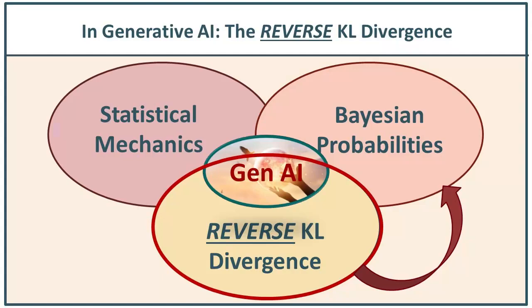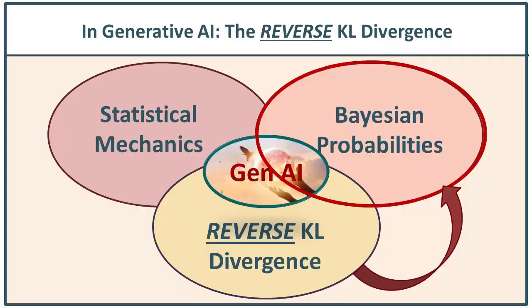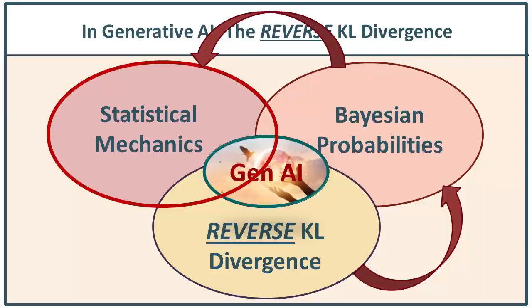They are, in order: number one, the reverse Kullback-Leibler divergence; this leads us to number two, Bayesian conditional probabilities; which leads us to number three, some usage in some manner of statistical mechanics. Those three combined form the essential core of all these generative AI methods in each of the three different vectors — Boltzmann machine-based, variational inference, variational autoencoders. They all use the same three fundamental core elements.